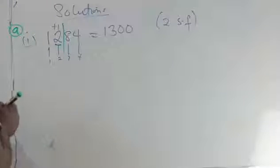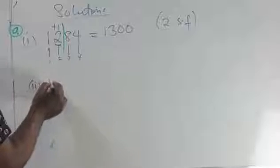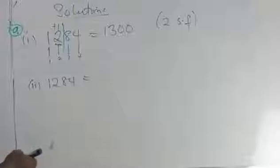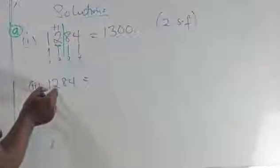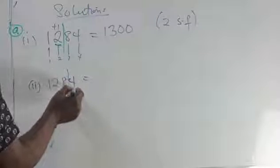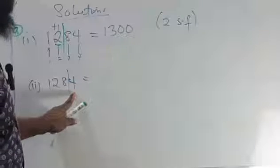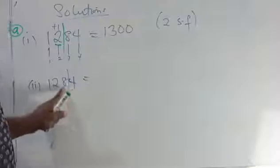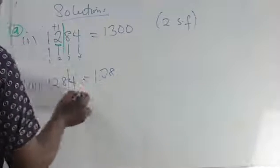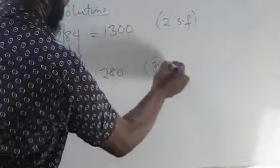Now rounding 1284 to 3SF: the first, second, and third significant figures are 1, 2, and 8. We consider the next digit, which is 4. Since 4 is less than 5, we round down. So the answer is 1280 to 3SF — the last digit becomes 0.